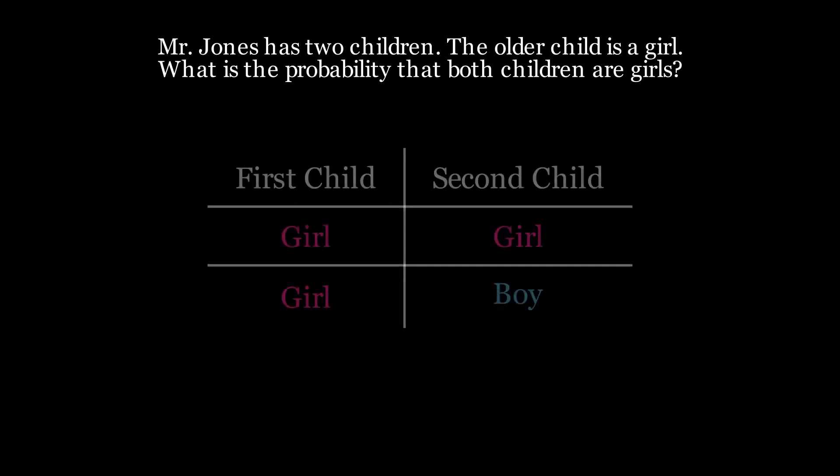Mr. Jones has two children. The older child is a girl. What is the probability that both children are girls? Clearly the second child may be only a boy or a girl. And assuming equal likelihood of either the probability that both children are girls is one in two.